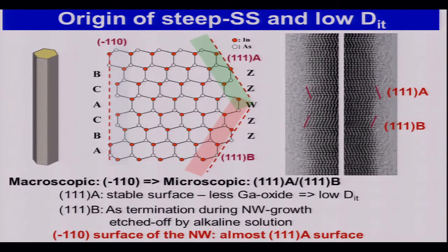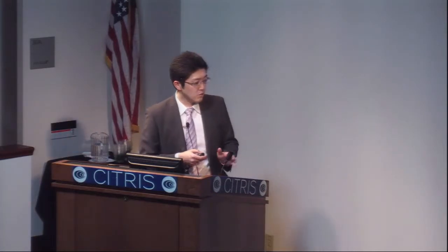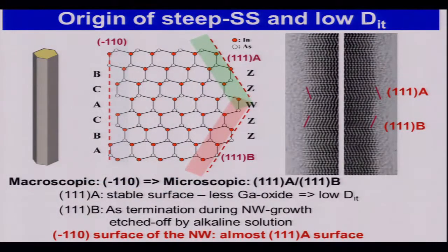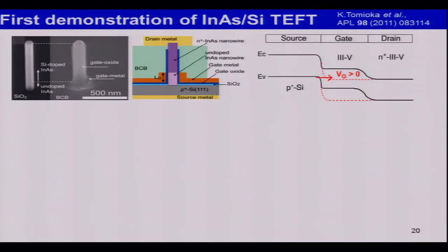The (111)B surface was etched off and transferred into a (111)A-oriented surface, meaning the sidewall surface of the nanowire has almost entirely (111)A surfaces. This (111)A surface is chemically stable with less gallium oxide. Usually gallium oxide results in larger DIT; however, in our case, suppression of gallium oxide formation results in lower DIT. That's why we can obtain lower DIT in our gate stacking technologies. We can utilize these convenient properties for the TFET.